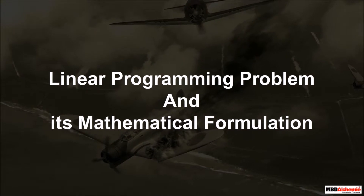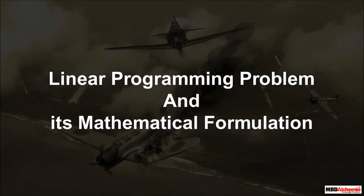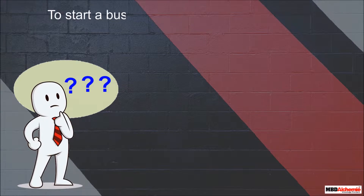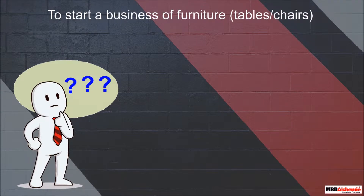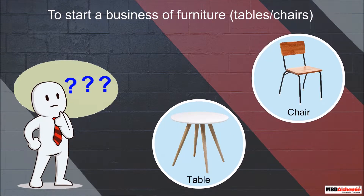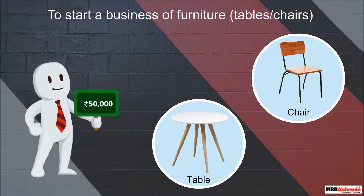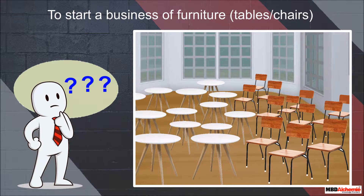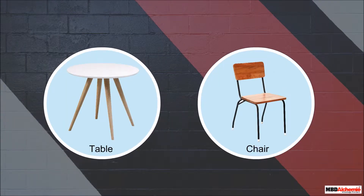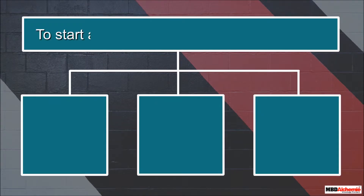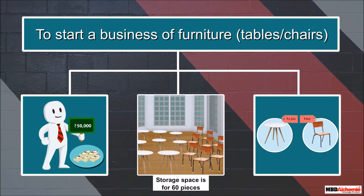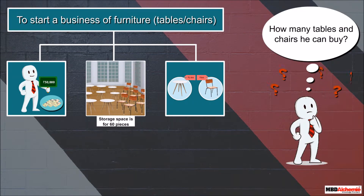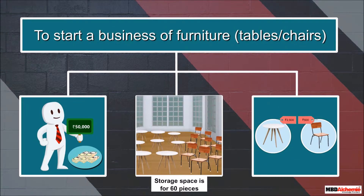Today we are going to learn about a linear programming problem and its mathematical formulation. A businessman wants to start a business of furniture. He finds that in his area he will be able to sell tables and chairs. He has 50,000 rupees to invest and he thinks the space he has would be sufficient for 60 pieces of tables and chairs. The cost price of a table is 2,500 rupees and a chair is 500 rupees. Using this information, he wants to know how many tables and chairs he can buy.